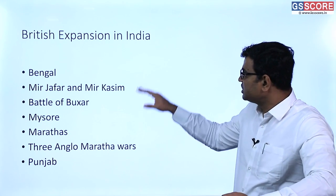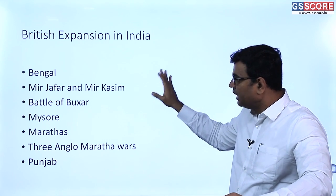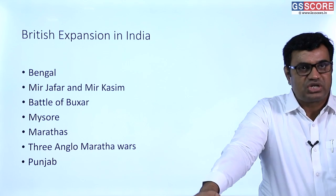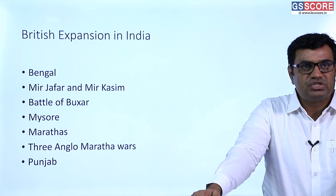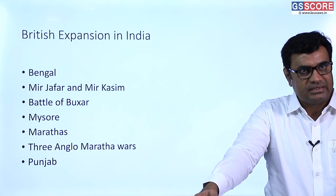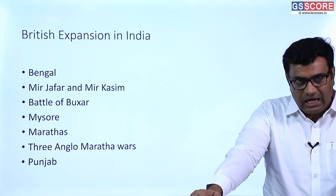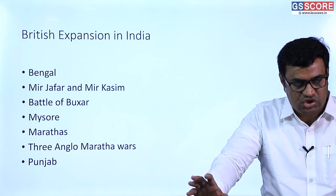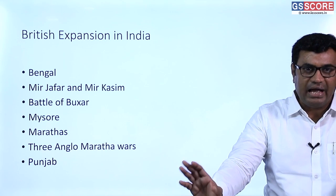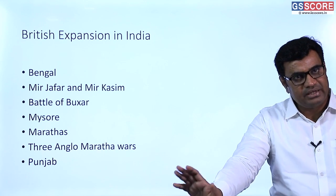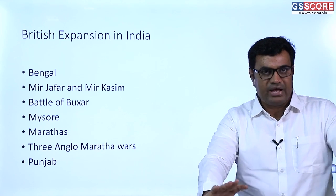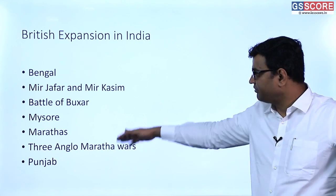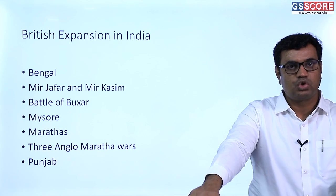British expanded beyond Bengal into other parts of India. In the south, they wanted to establish control over Mysore, effectively ruled by Hyder Ali and his son Tipu Sultan. Both Hyder Ali and Tipu Sultan tried to defend Mysore, resulting in four Anglo-Mysore Wars. Ultimately Mysore forces were defeated and Mysore was conquered by British authority.